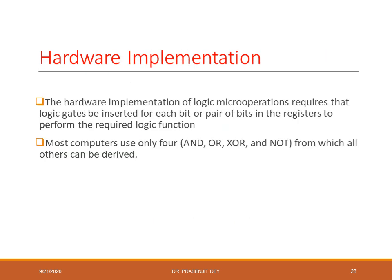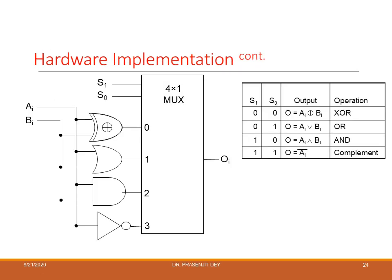These logical operations can be implemented in hardware using a 4x1 multiplexer with 2 selection lines. The zeroth input to the multiplexer is the XOR of AI and BI; the first input is the OR of AI and BI; the second input is the AND of AI and BI; and the fourth input is the complement (NOT) of AI. Selecting 00 performs XOR, 01 performs OR, 10 performs AND, and 11 performs the complement of AI.